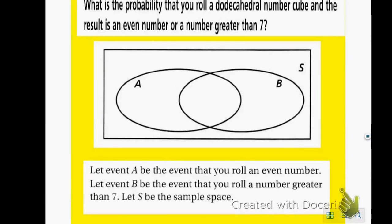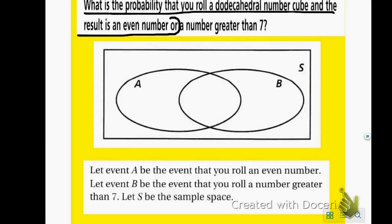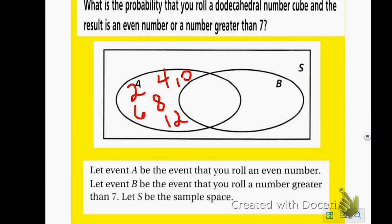Here's another example. What is the probability that you roll the number cube and the result is an even number or a number greater than 7? Let's complete our Venn diagram to help us out. Let event A be the event you roll an even number, so I put 2, 4, 6, 8, 10, and 12 in circle A.